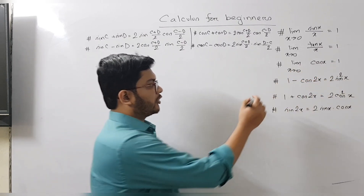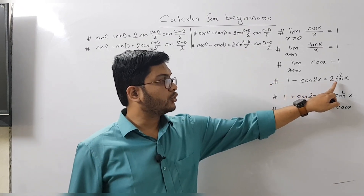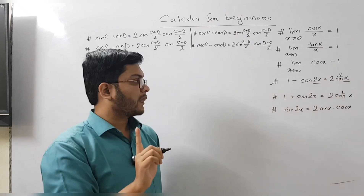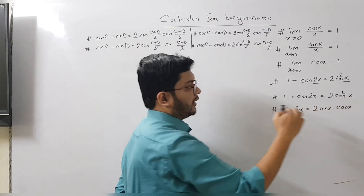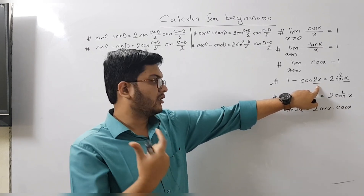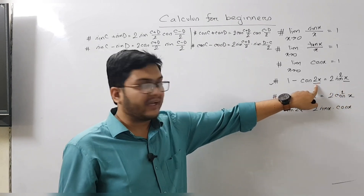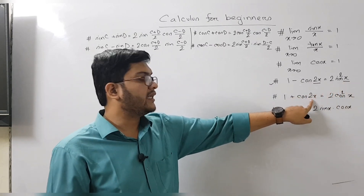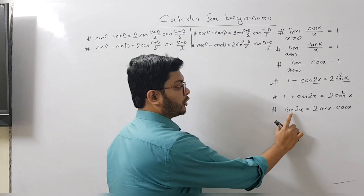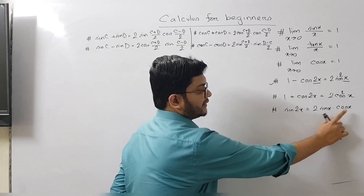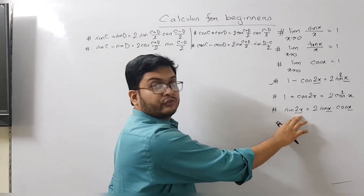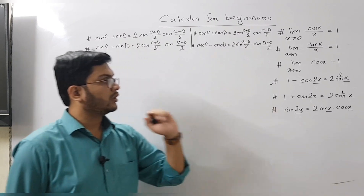Now here comes an important formula: 1 minus cos(2x) equals 2 sin²(x). Notice that the argument is 2x on the left but just x on the right — it is being halved. So if you have 5x it becomes 2 sin²(5x/2). Similarly, sin(2x) equals 2 sin(x) cos(x): the 2x is halved to give x and x. So if it's 4x, it becomes 2 sin(2x) cos(2x).